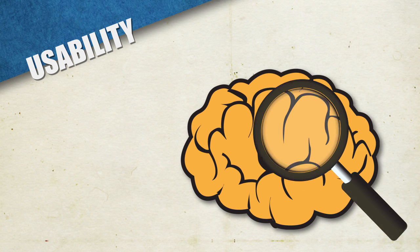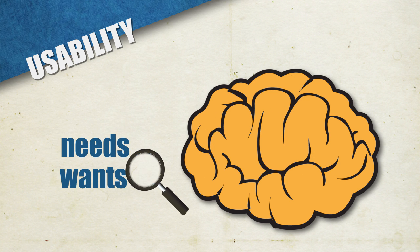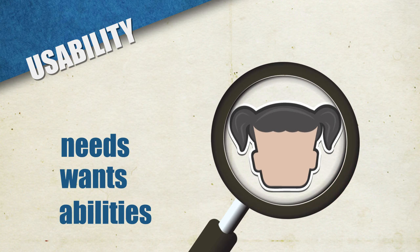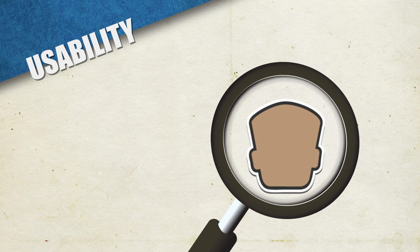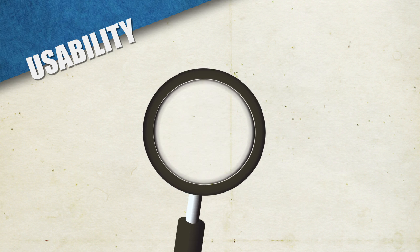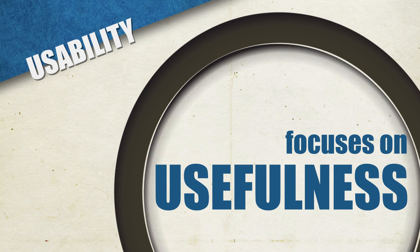User experience design focuses on a deep understanding of the user's needs, wants, and abilities. Usability, or user-centered design, is the process of designing something from the perspective of how it will eventually be used by an actual person. Simply put, usability differs from user experience because it considers a product's usefulness in addition to everything else covered by user experience design.